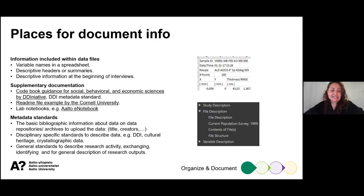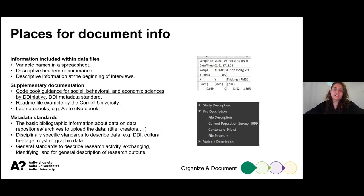Be mindful of metadata standards — the basic bibliographic information about data in repositories or archives such as title and creator. These are often specific to your discipline. The DDI initiative is an example for social sciences, and cultural heritage and geographic data each have their own metadata standards. These general standards describe the research activity and identify your research outputs. Look into the metadata standards within your field to ensure that the data you create is interoperable — in a format that includes all necessary information and is useful for other researchers.